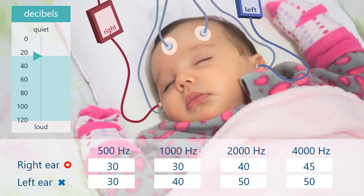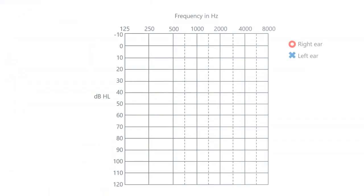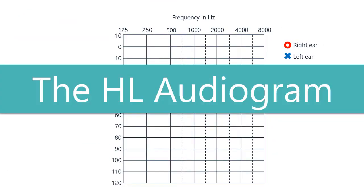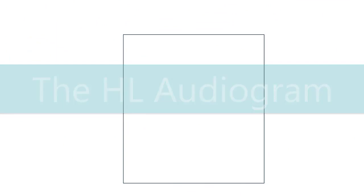By putting those numbers on a graph called the audiogram, we can get a better idea about how a child hears and also about what we can do to help. The HL audiogram is a chart that helps us to put the results of a hearing test into perspective. It will help to break this chart down into its parts. As we put the chart back together, you will see how useful it can be.